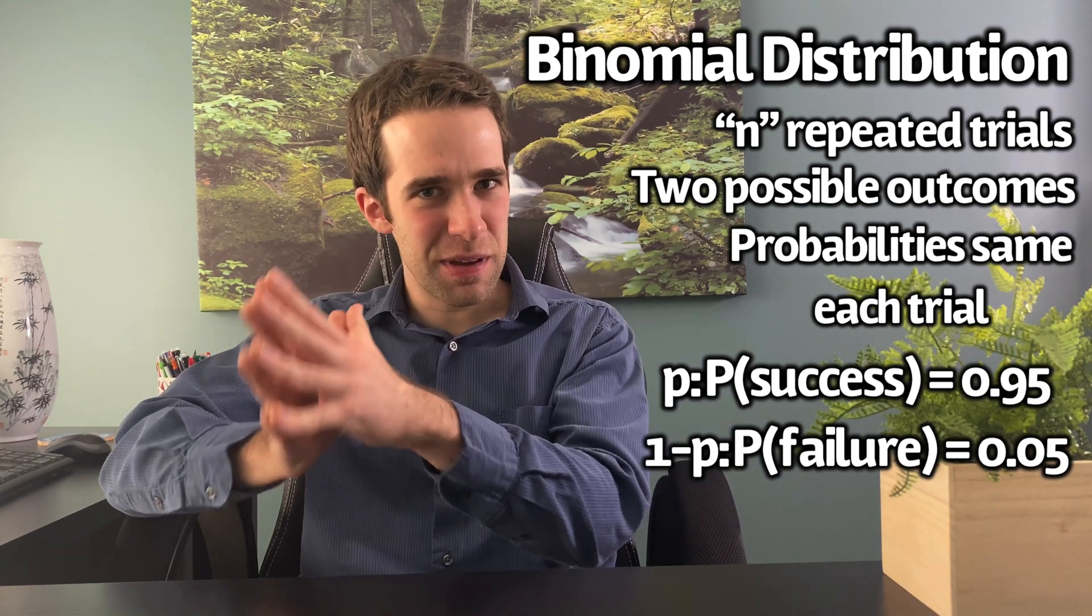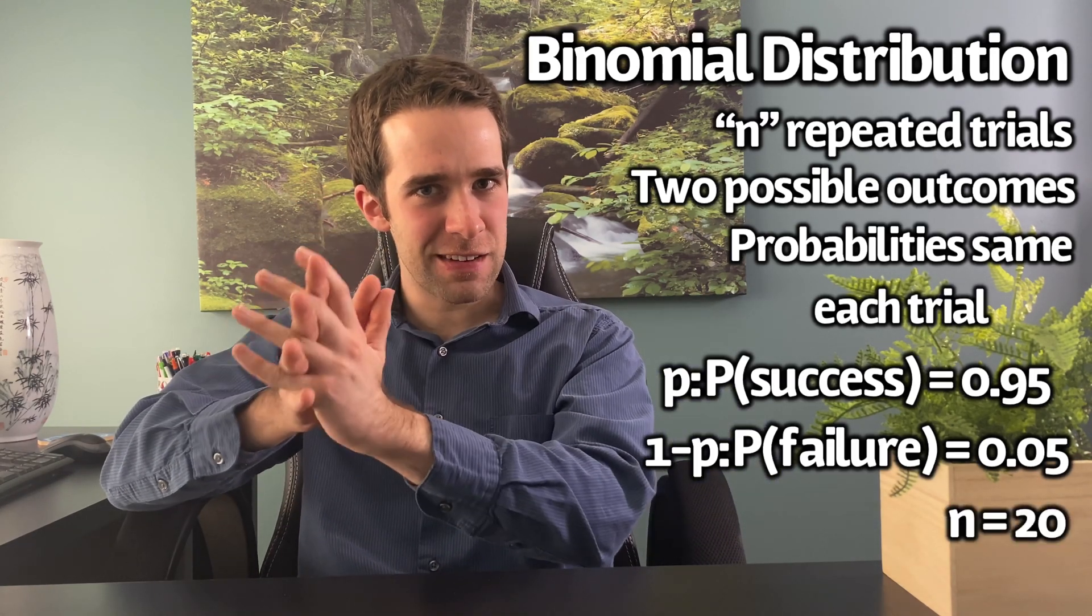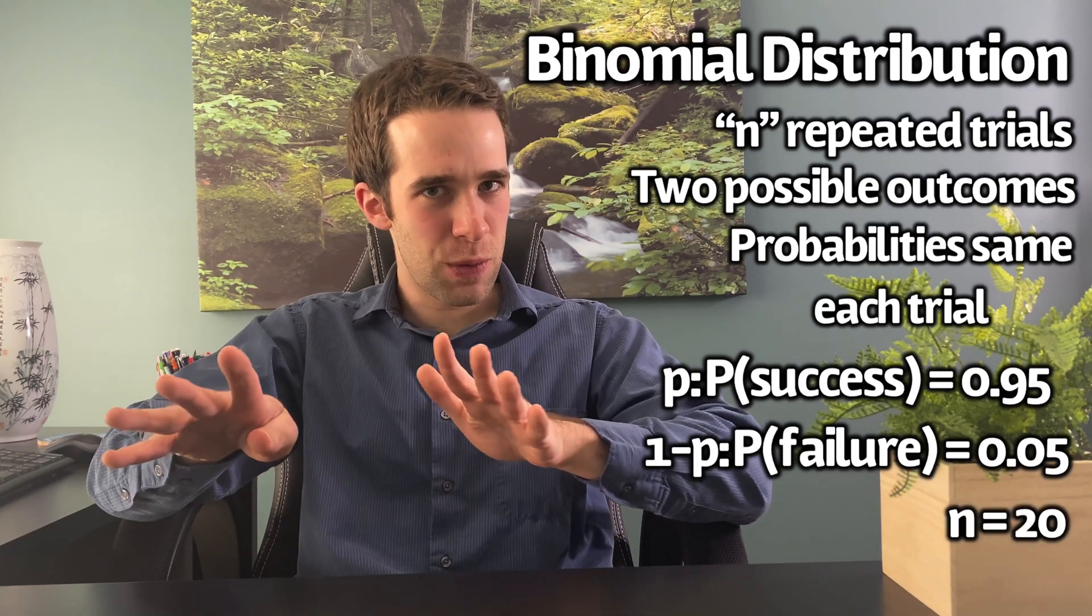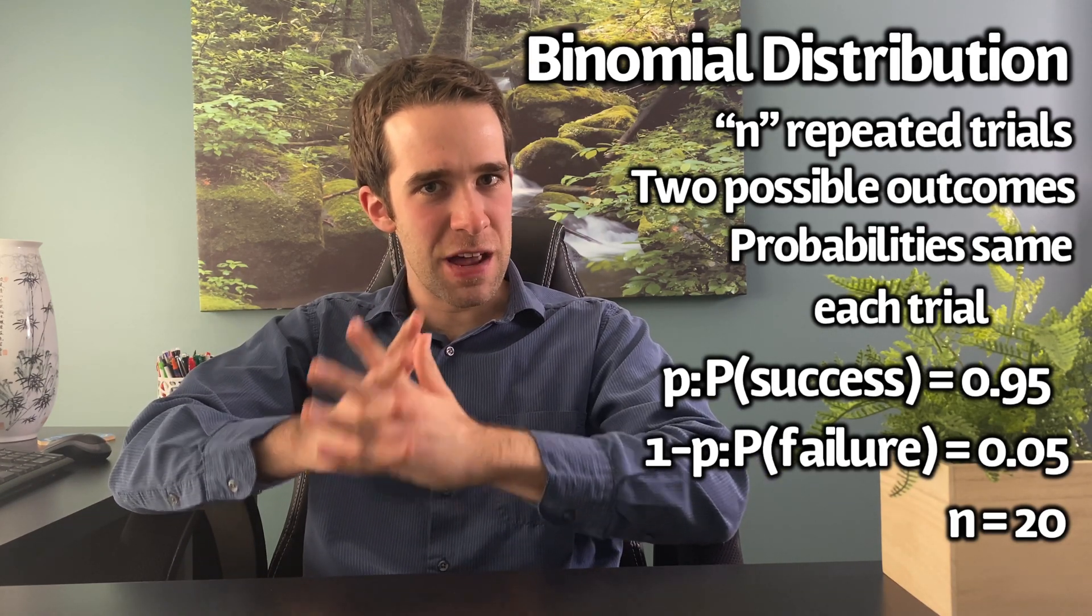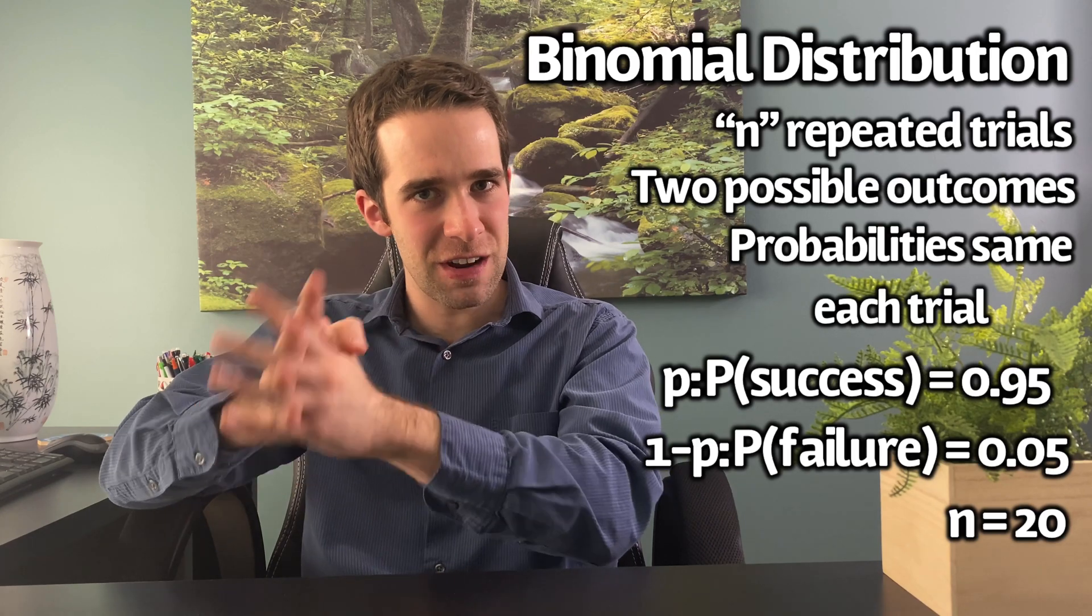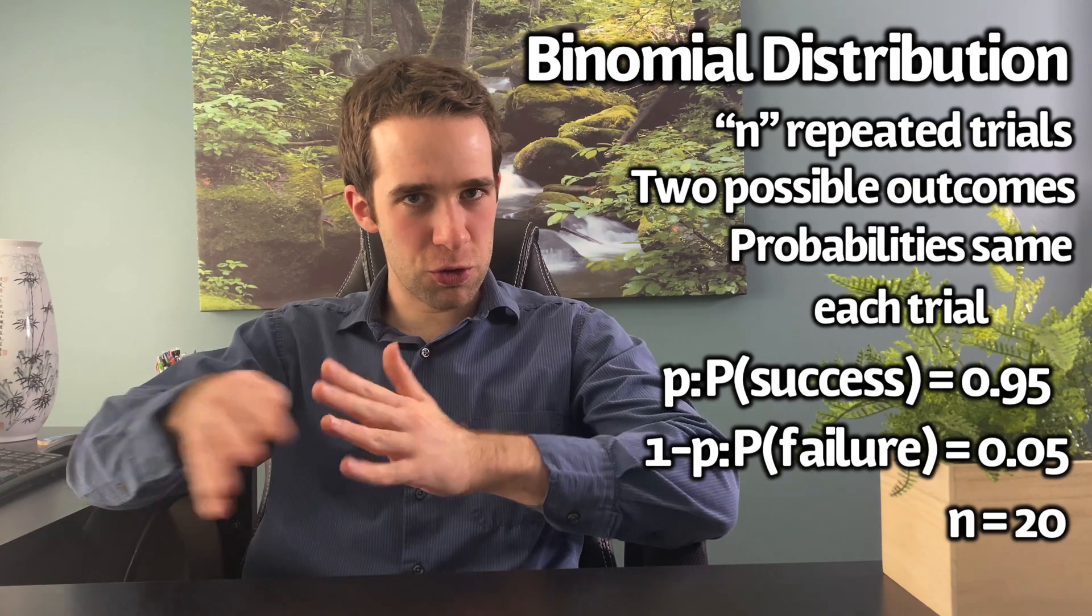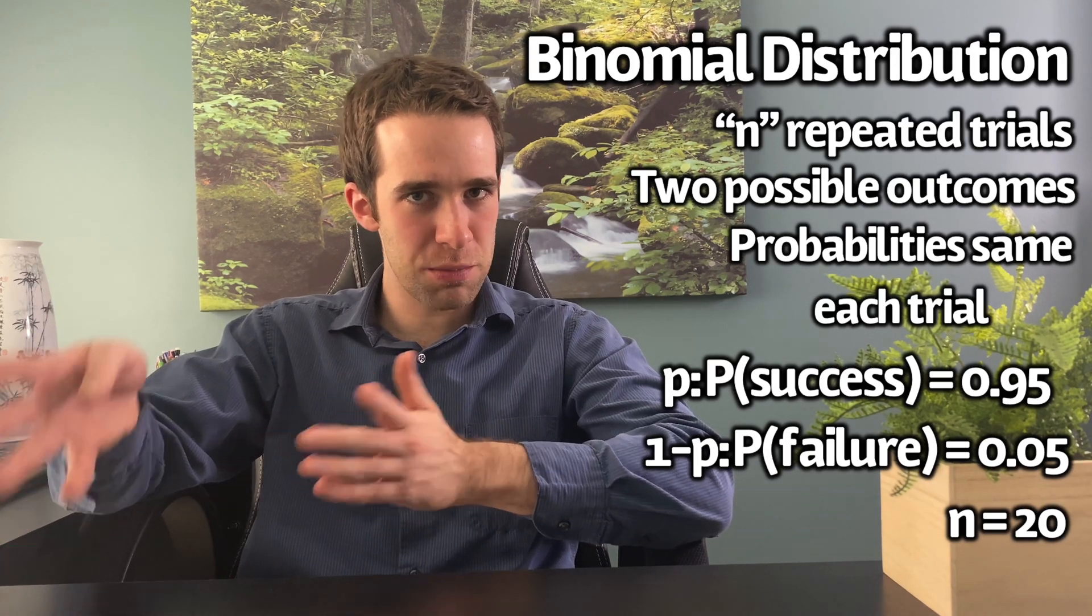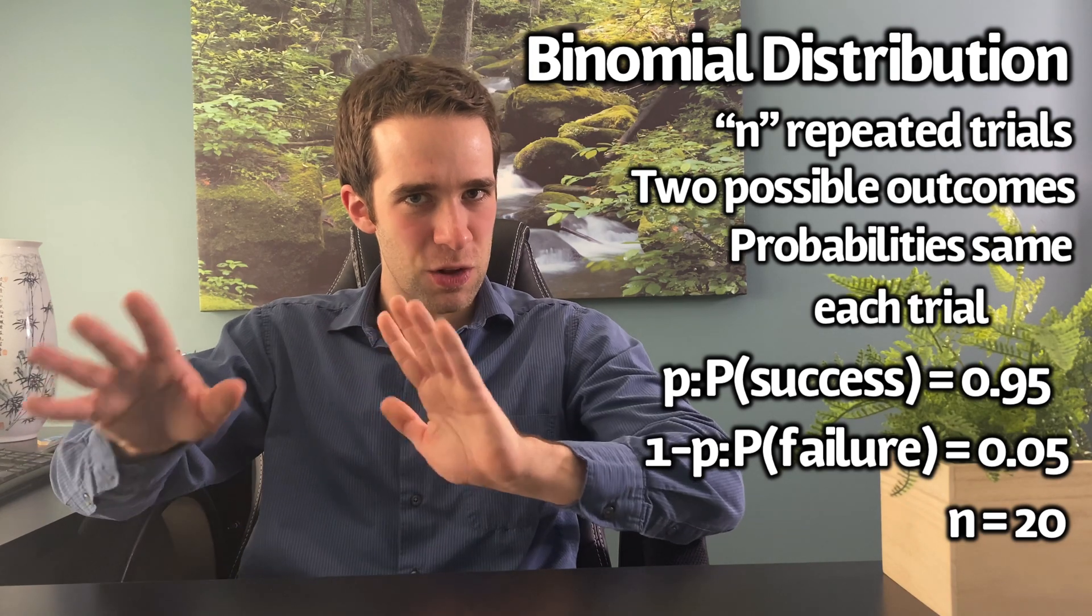Now let's extend that same example and let's suppose we have 20 people, they're all infected with this disease, the survival rate is still 95% and we want to calculate the probability that no more than one person dies. Here is a case of multiple Bernoulli trials. So you have multiple trials with two possible outcomes, success or failure, and the probability is the same on every single trial.